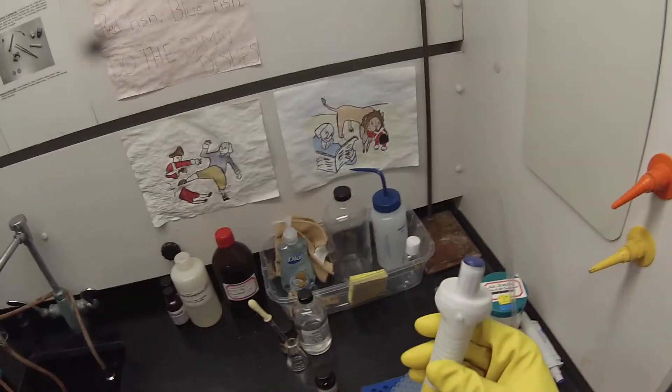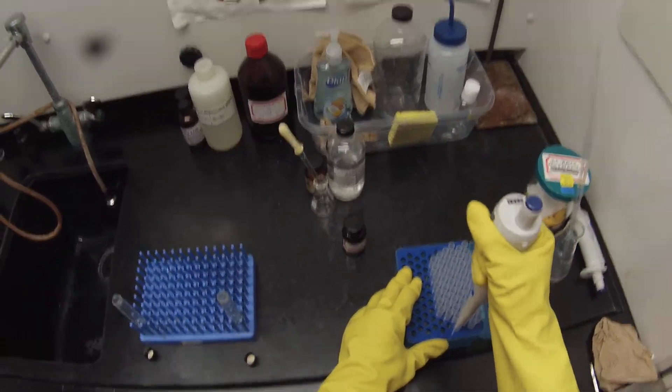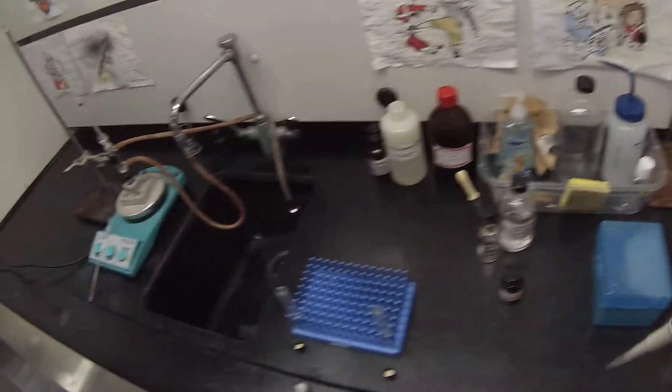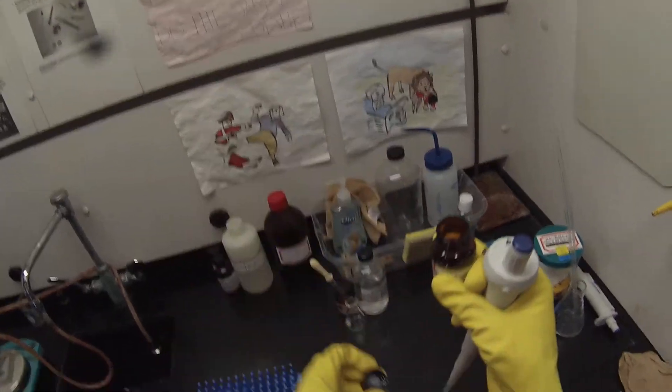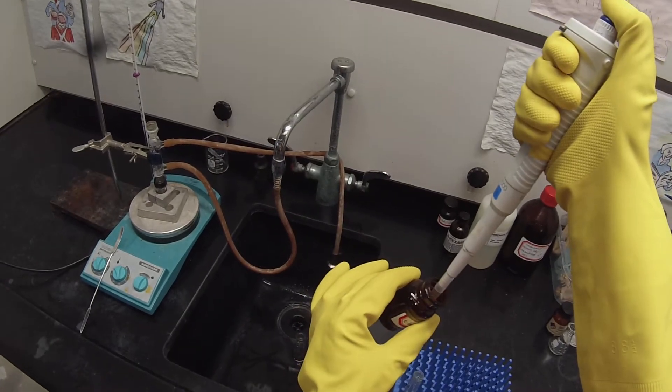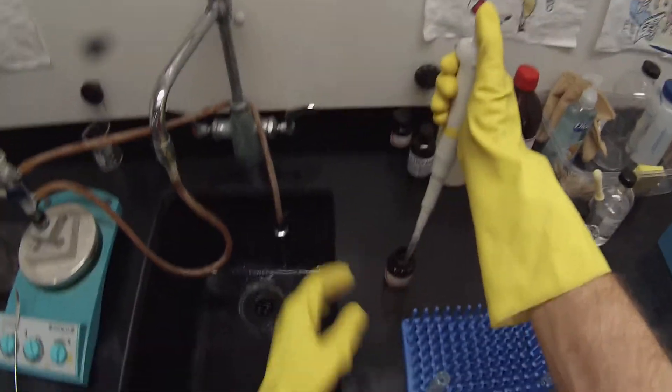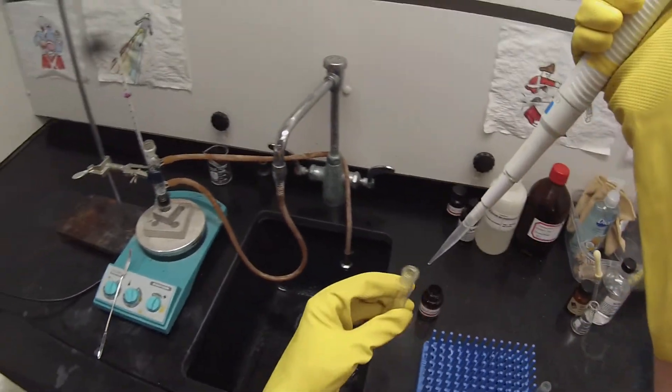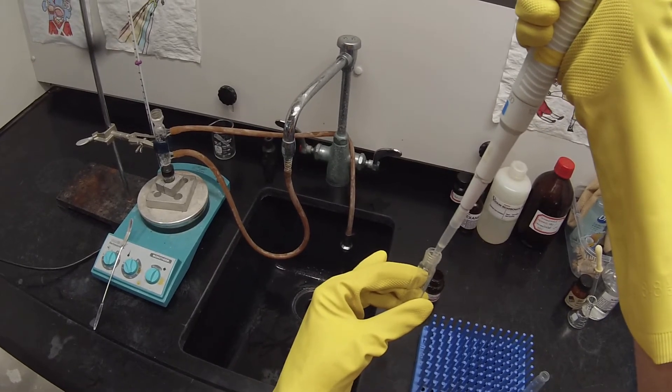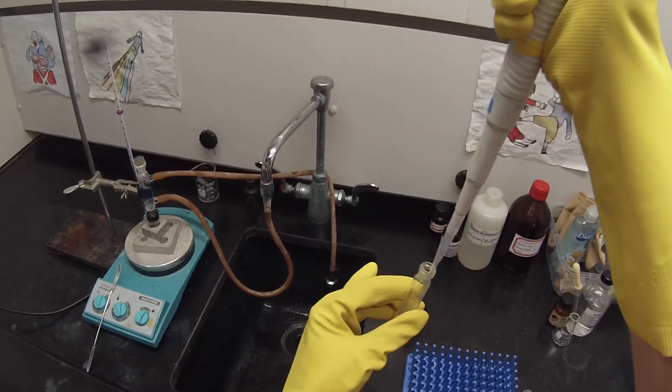So I have my pipetter, which is set at 950 microliters. And my t-butanol, which hopefully will not solidify in the pipetter. Sometimes it does. So I'm going to take 950 microliters of t-butanol. And stick it in the centrifuge tube. And this one I'm going to allow to, and then down to the second one. This is the one that I'm going to allow to react for way too long.